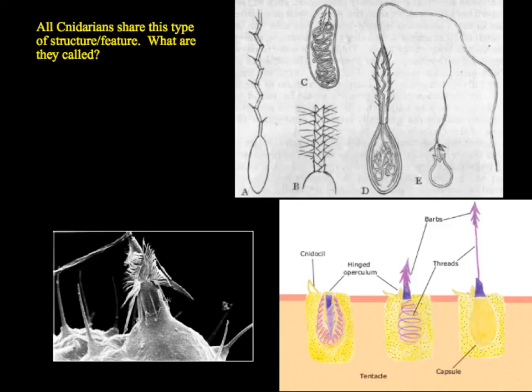Every cnidarian has cnidocytes, which include these stinging cells called nematocysts. You can see that they've got barbs, and they are filled with venom.